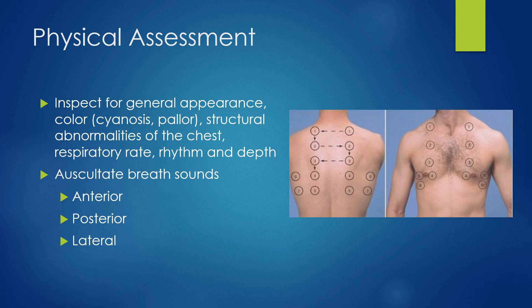Next, we auscultate the lung sounds — anteriorly, posteriorly, and laterally, from the apices all the way to the bases of the lungs. We're listening for normal breath sounds and any abnormal or adventitious lung sounds. Are their lung sounds as loud as they should be, or are there areas softer than expected? If they're producing sputum, we need to look at it: what color is it, what's the consistency — is it clear, yellow, green, or bloody?